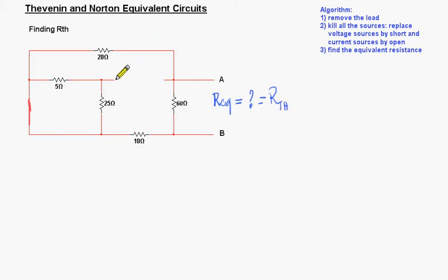So let's do it. We replace the current source by an open and the voltage source by a short circuit. And now what we can see here is that since we don't have anything here, there's nothing connecting this node to any other point. We can see that the 5 ohm resistor is in series with the 25 ohm resistor, so we can add them up.